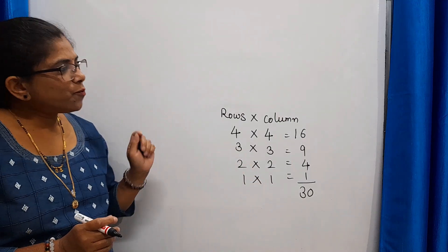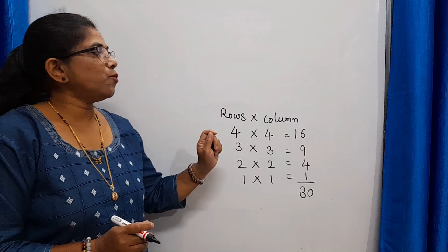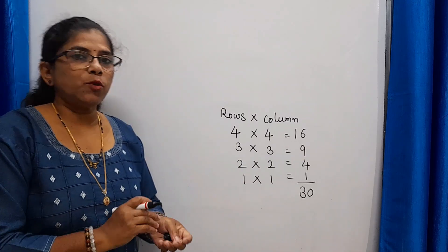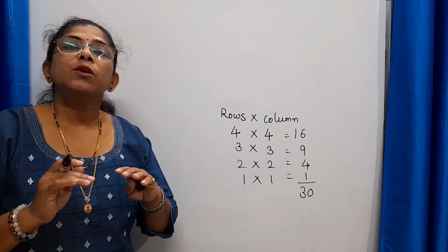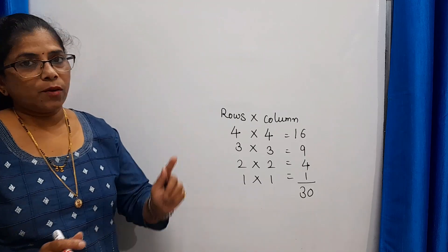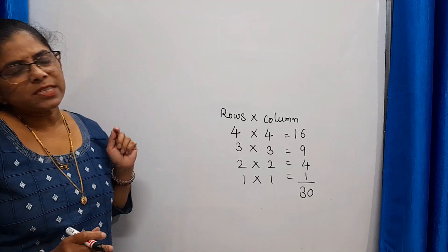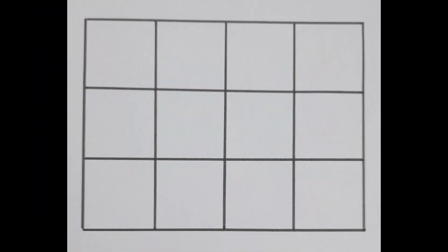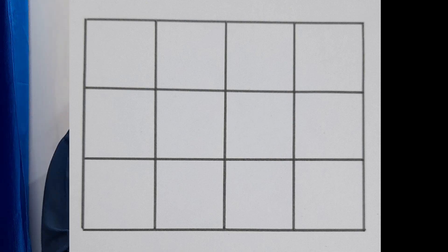Now, what if the number of rows and number of columns is not equal — that is, they are unequal? Just have a look at this figure. In this figure, we have 4 squares in one row and 3 squares in one column. How do we solve this?